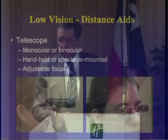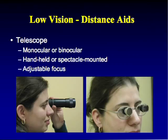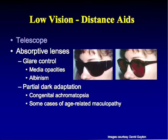For distance vision, choices are more limited. Options include monocular or binocular telescopes, handheld or spectacle-mounted, with adjustable or fixed focus. Bioptic telescopes are built into glasses — the patient tips their chin to look through the telescope when needed, leaving hands free for navigation. In some states it is legal to drive with bioptic aids if they achieve 20/40 and peripheral vision is intact.